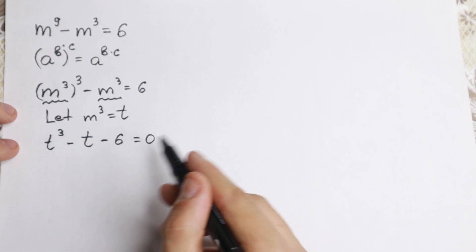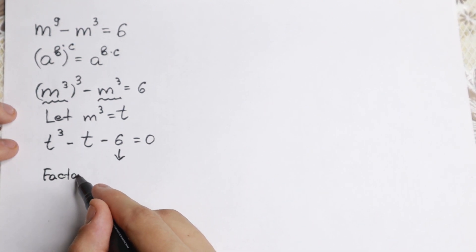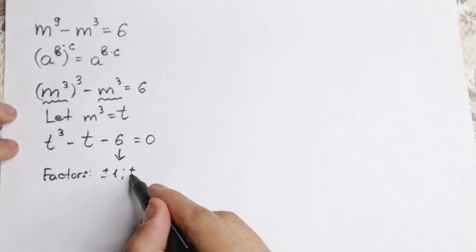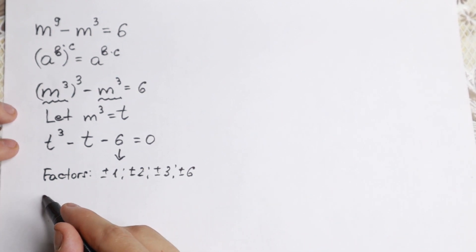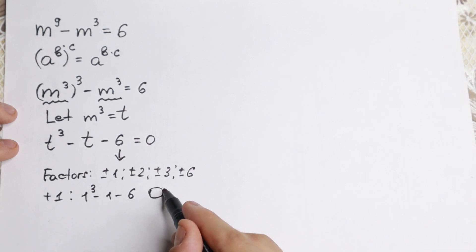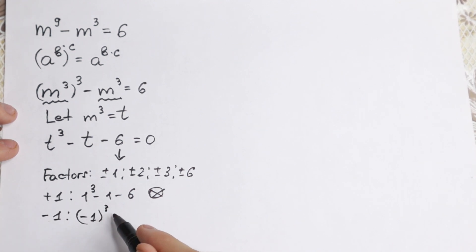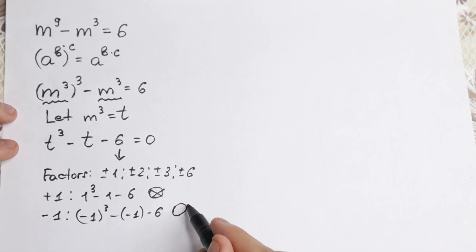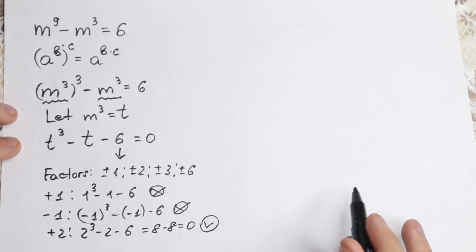There are many methods to solve a cubic equation, but I want to show you the method I use. First, I find the factors of 6: plus or minus 1, plus or minus 2, plus or minus 3, and plus or minus 6. I start with the obvious ones. Plugging in +1: 1 minus 1 minus 6 — not equal to 0. Plugging in -1: -1 minus (-1) minus 6 — not equal to 0. Plugging in +2: 8 minus 2 minus 6 equals 0. So t = 2 is one of our roots, meaning (t - 2) is a factor.